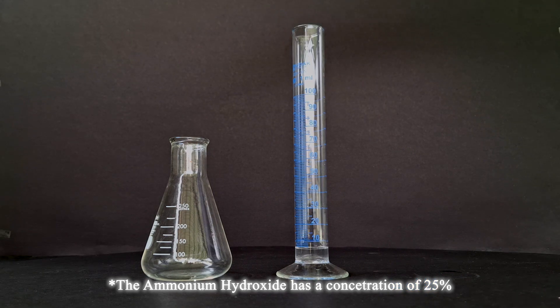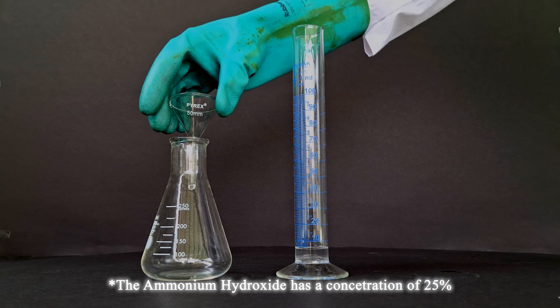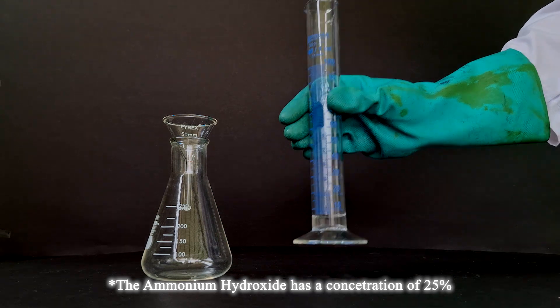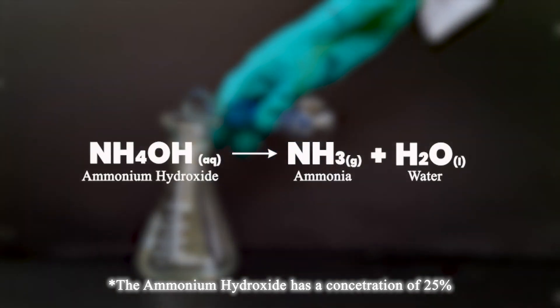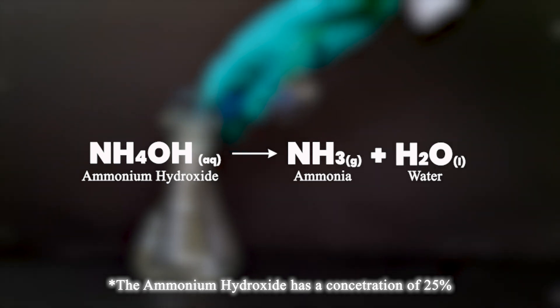But I will still be using the Erlenmeyer, since the amount of ammonia gas produced should not be a problem. The formula for the decomposition of ammonia hydroxide is as follows.